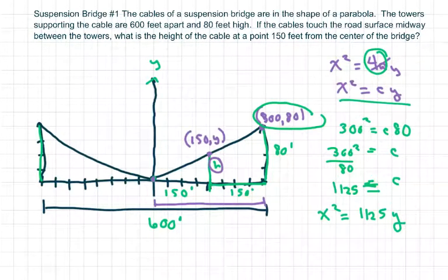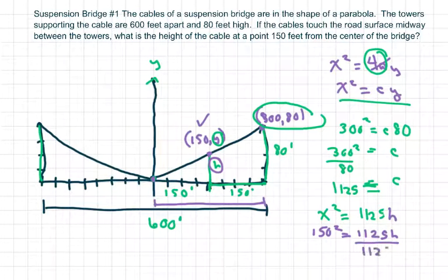We're going to plug in 150 here. So when we plug in 150 into the equation, we get 150² = 1125h. Divide both sides by 1125, and you get h = 20.